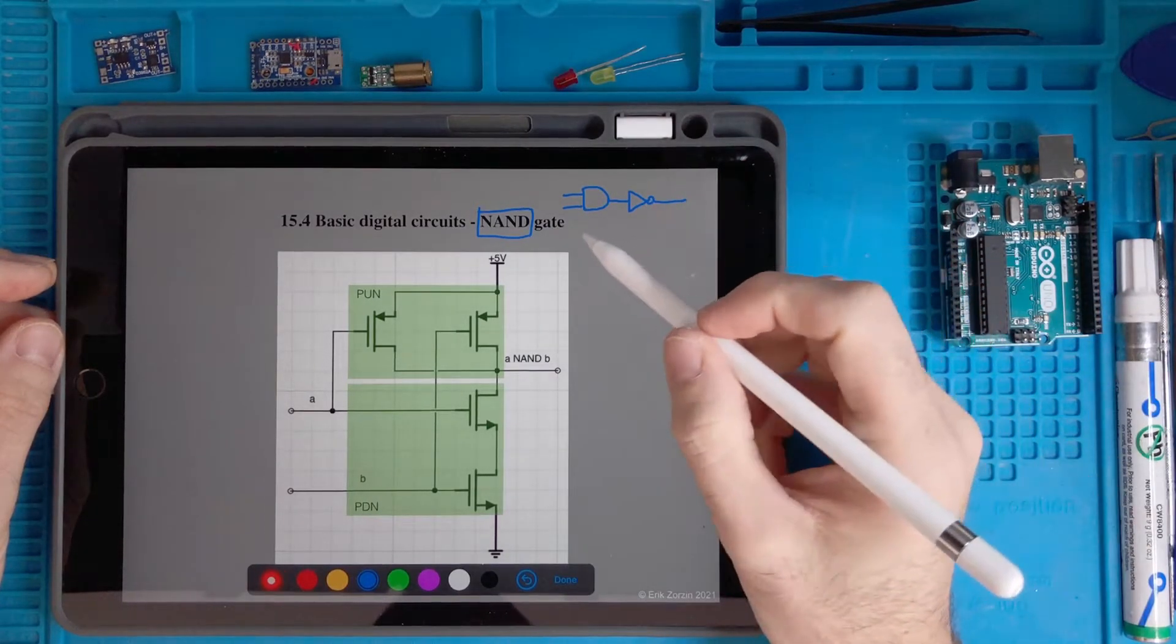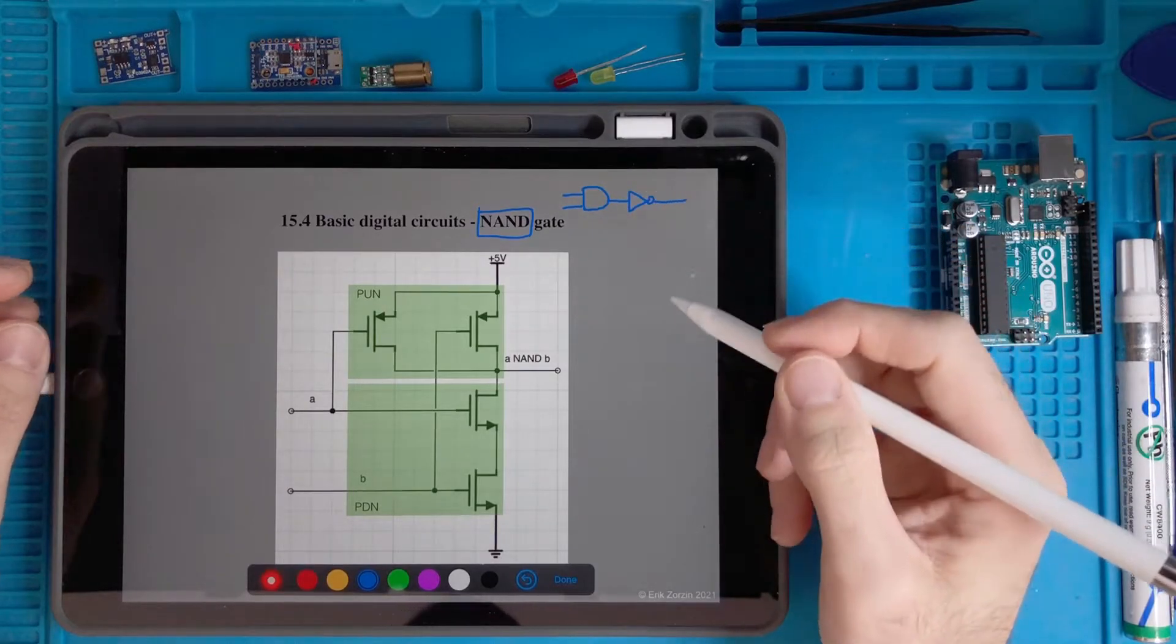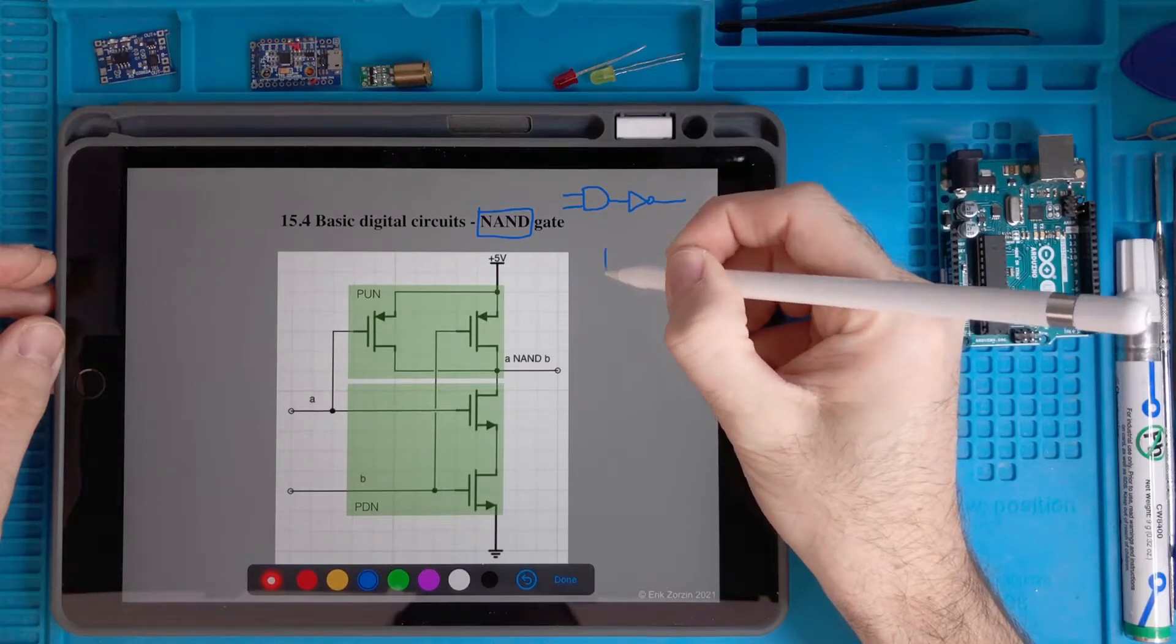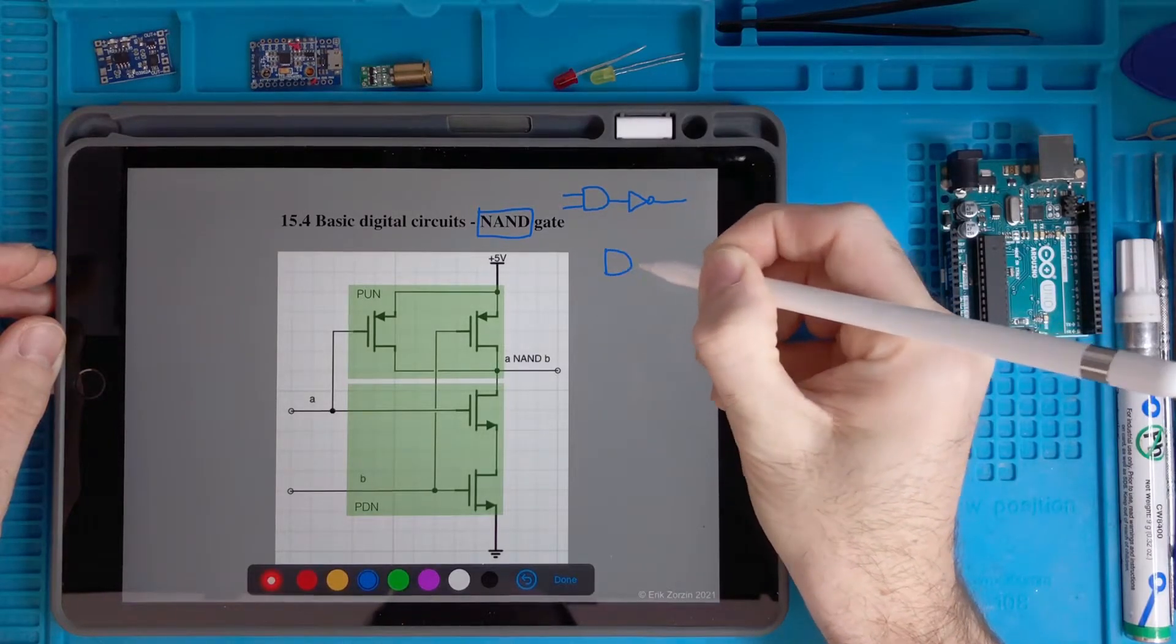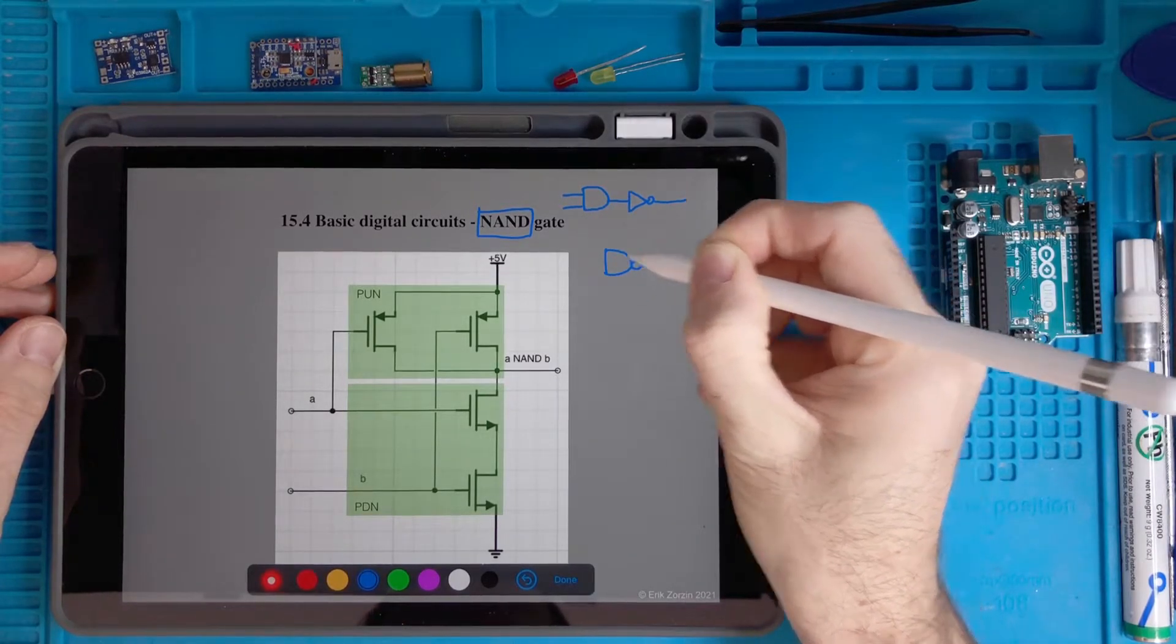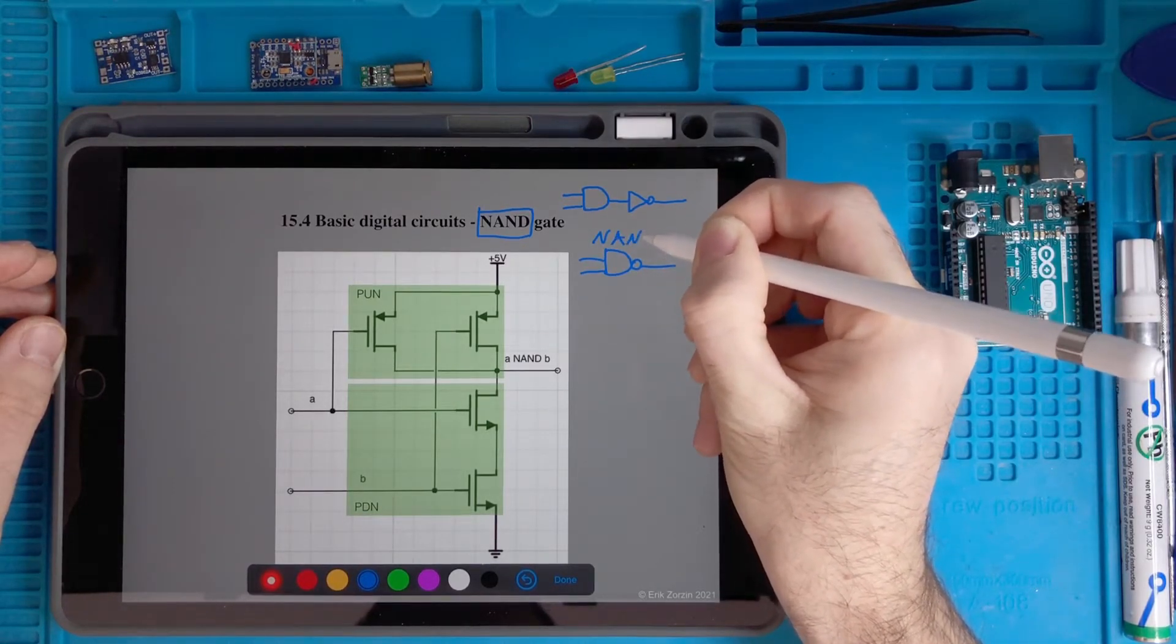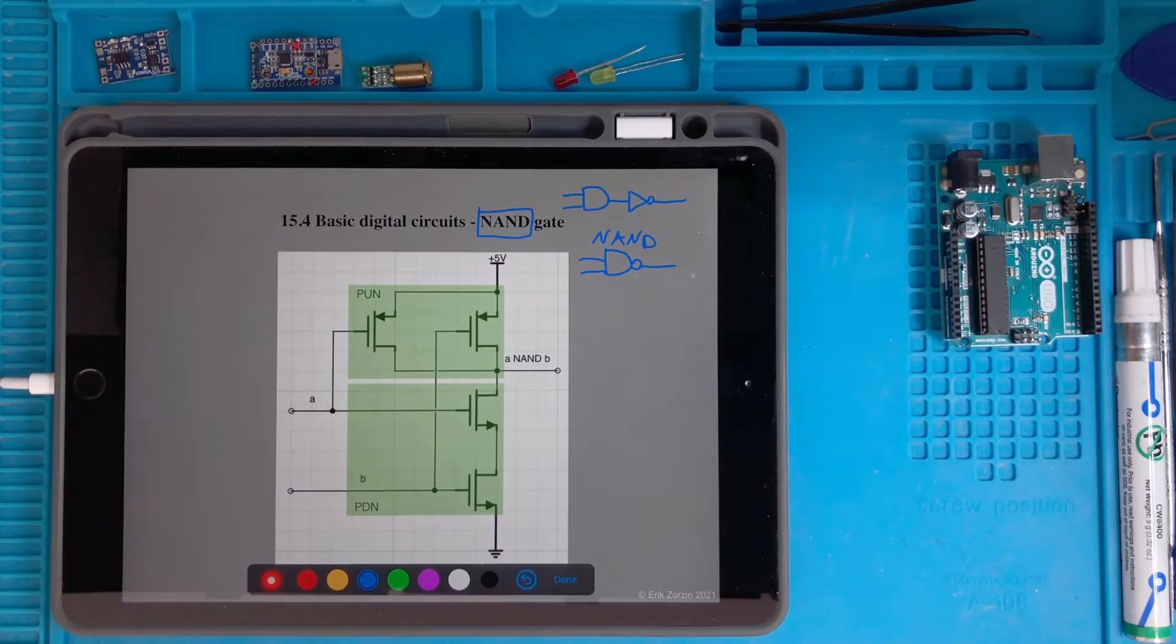So we can write this circuit in a shortcut form which is this. This thing is called NAND. We said we wanted to implement the AND gate, and now we are implementing the NAND gate. Why is it like this?